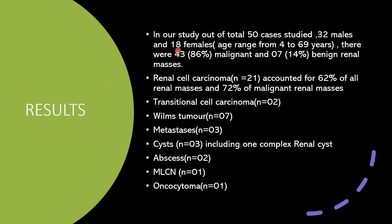Results: a total of 50 cases were taken — 32 males and 18 females. 43 were malignant cases and 7 were benign cases. Renal cell carcinoma was the majority, comprising 21 cases, accounting for 62% of all renal masses and 72% of malignant renal masses.